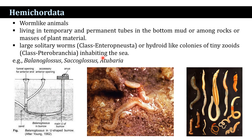Pterobranch colonies inhabit a branching tubular network that is secreted from glands in the oral shield of the zooids. The oral shield is a glandular ciliated disc on which the zooids glide over the inner surface of the tube.